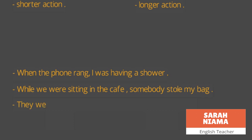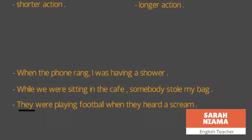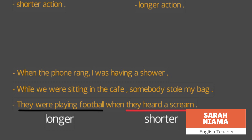Final example: 'They were playing football when they heard a scream.' Comparing the two events: 'playing football' is the longer ongoing action (past continuous), while 'heard a scream' is the short sudden event (past simple). Use this meaning comparison to identify which event should be in past continuous and which in past simple. Thank you for listening.